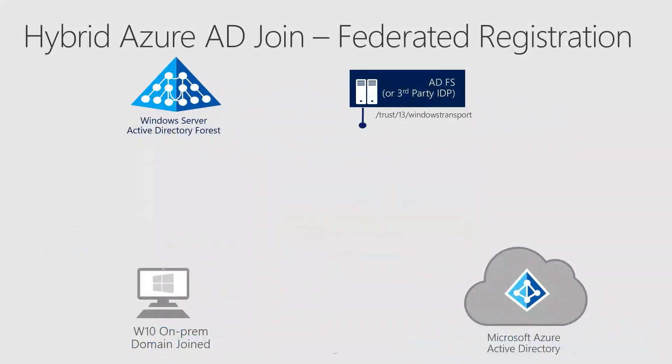Now that we know the importance of hybrid Azure AD joined devices, can you explain how hybrid Azure AD join actually works? Sure, Ravi. First, let's take a look at the hybrid Azure AD joined federated registration flow. Hybrid Azure AD join triggers only when the group policy object is either not configured or configured to have enabled automatic device registration.